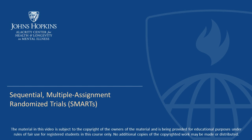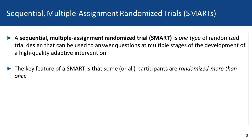In this section, we'll be talking about an experimental design which is useful for addressing questions related to developing high-quality adaptive interventions in mental health services research. That experimental design is called a Sequential Multiple Assignment Randomized Trial, or a SMART. A SMART is one type of randomized trial design that can be used to answer questions at multiple stages of the development of a high-quality adaptive intervention.